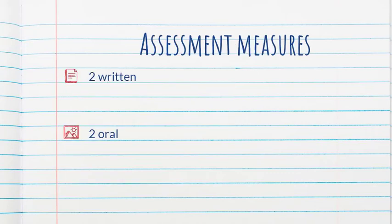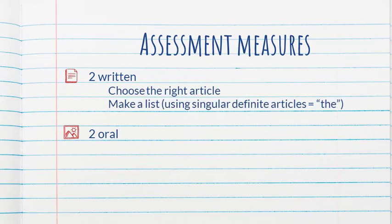The assessment measures were two written tasks and two oral tasks, with an immediate and a delayed post-test. The delayed post-test took place eight weeks after the treatment. One of the written tasks consisted of having learners choose the right article for each word. In the other task, the learners had to choose ten ingredients to make a dish and write a list using the singular definite articles — the equivalent of 'the' in English.